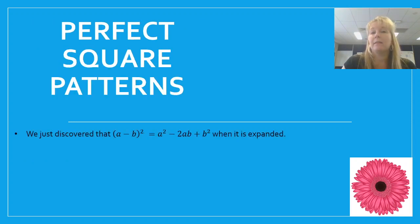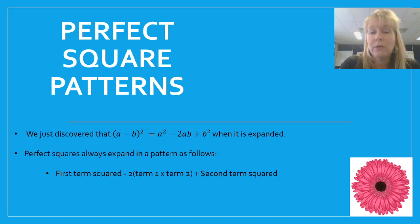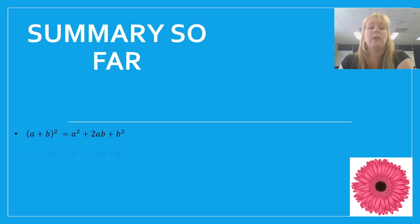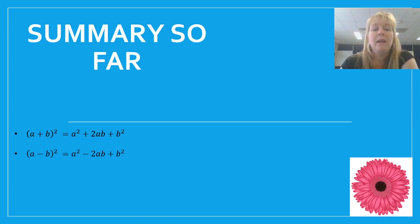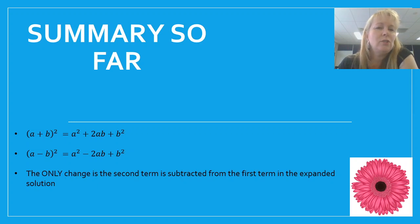We've just found that pattern — that's what it looks like when expanded with a negative. Perfect squares with a negative always expand in this pattern: first term squared, take away 2 times the first term times the second term, plus the second term squared. That's because negative times negative gives positive for the last term. Looking at both forms together — a plus b all squared and a minus b all squared — the only change is that the middle term is subtracted. Write this down; it's a really good tool to memorize.